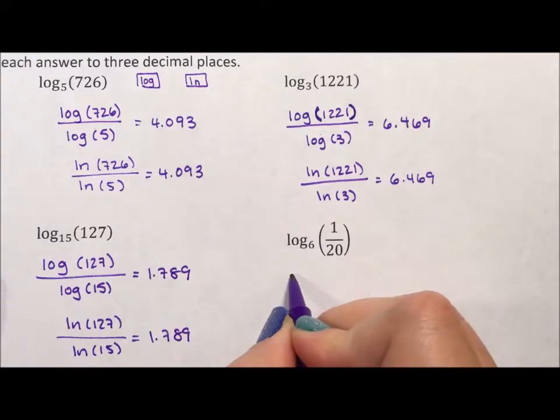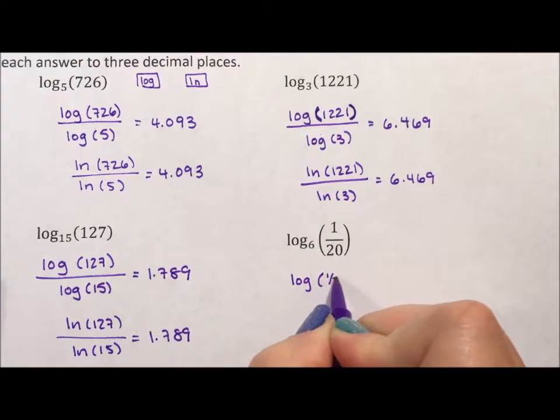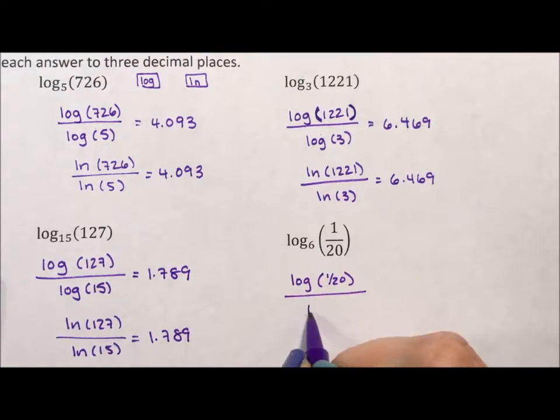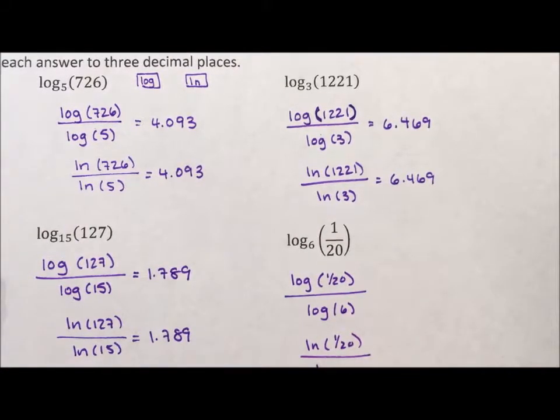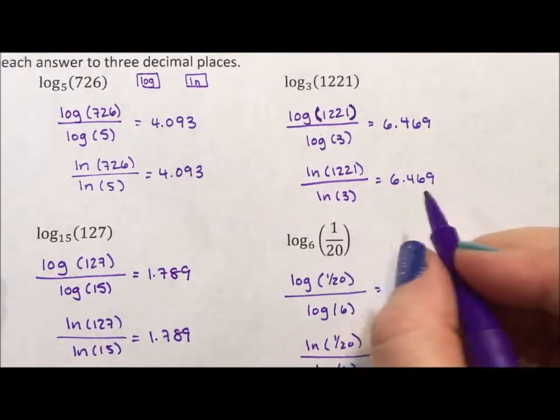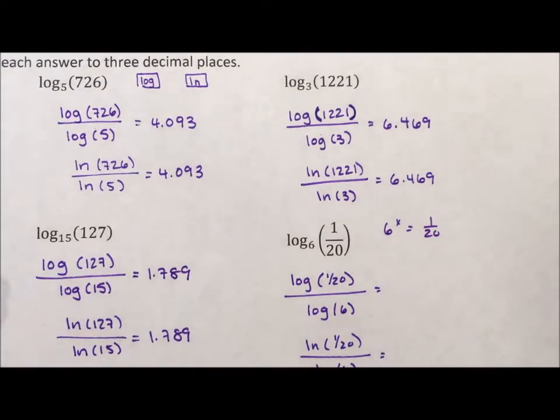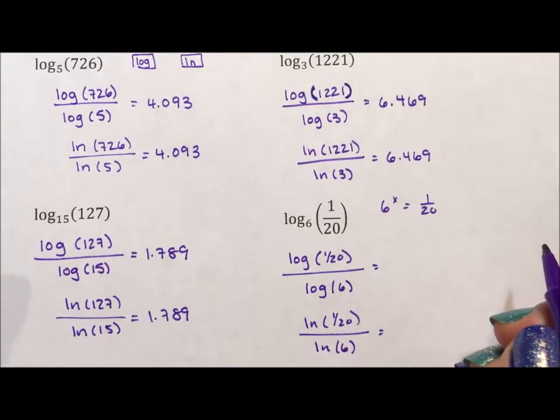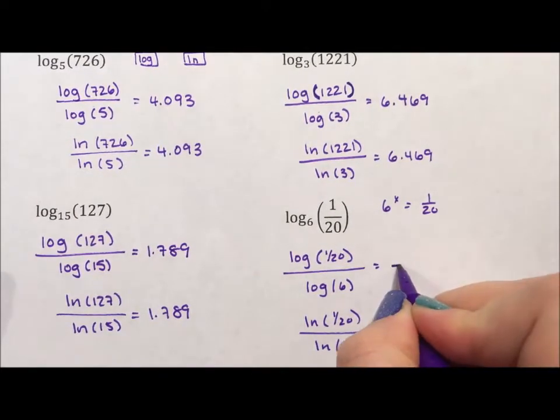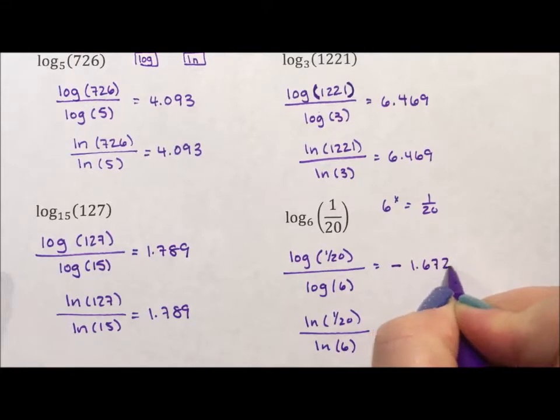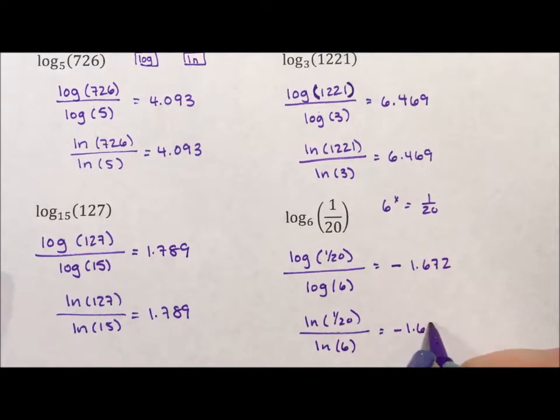And then this last one I have log of 1 over 20 divided by log of 6, or natural log of 1 over 20 divided by natural log of 6. Before the answer freaks you out, remember this is asking 6 to what power is 1 over 20. To get from numerator to denominator we have to have a negative exponent. So when we plug this into our calculator and we get the answer negative 1.672, it makes a lot of sense.